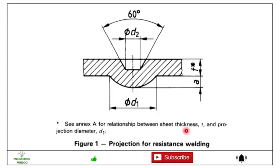To see further relation between the sheet metal thickness T and the projection diameter d1, you need to refer to Annex A. This is the standard nomenclature or designation for projection, and this is the cross-section of projection shown here for clarification.